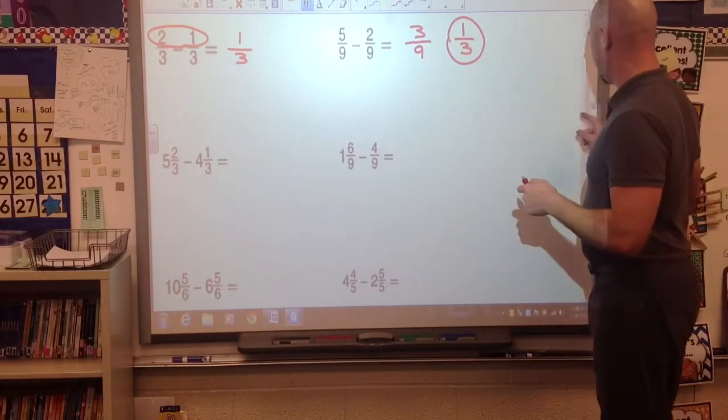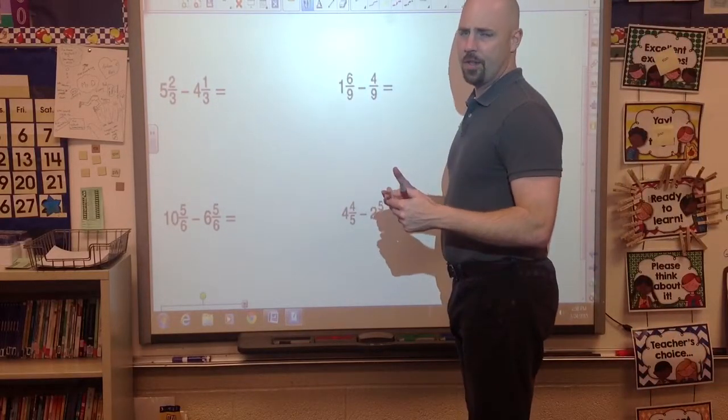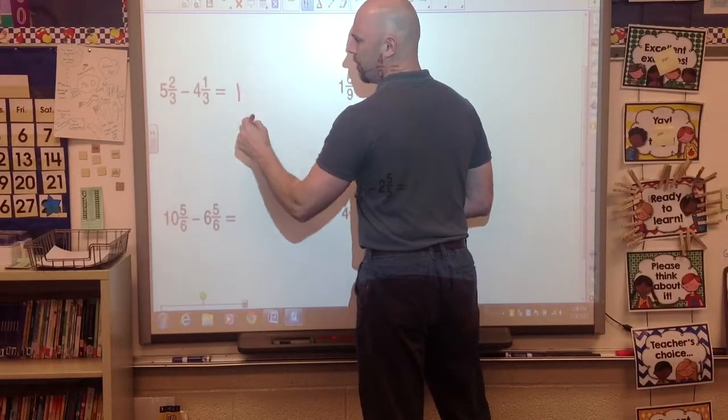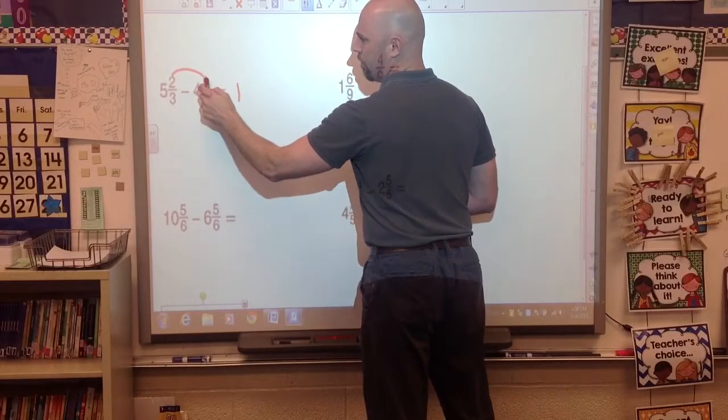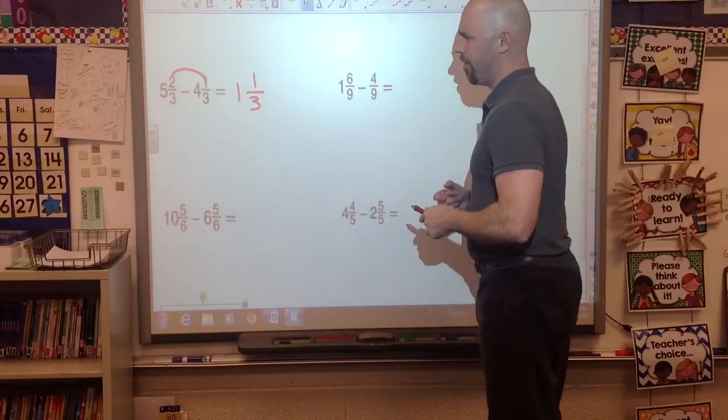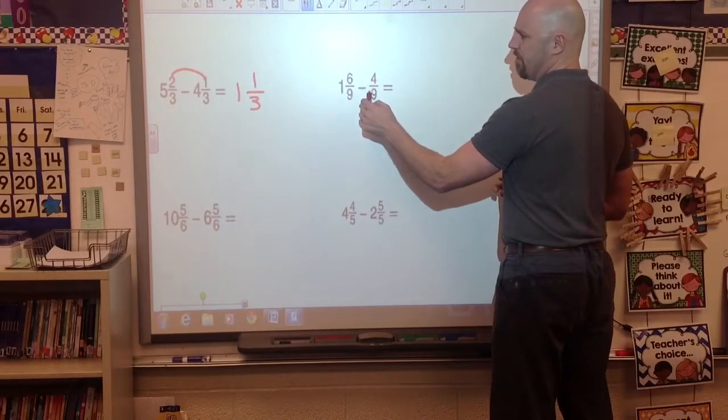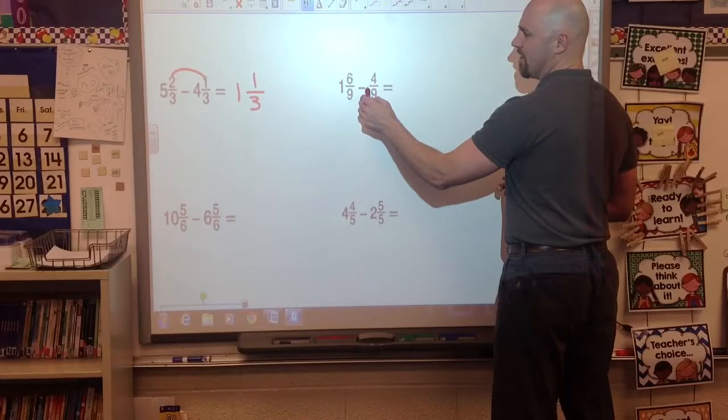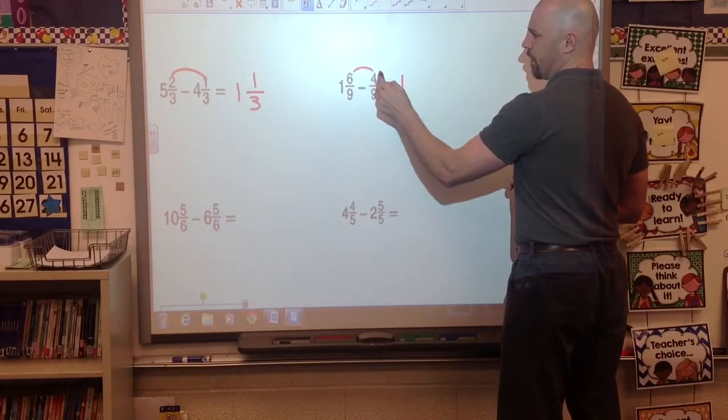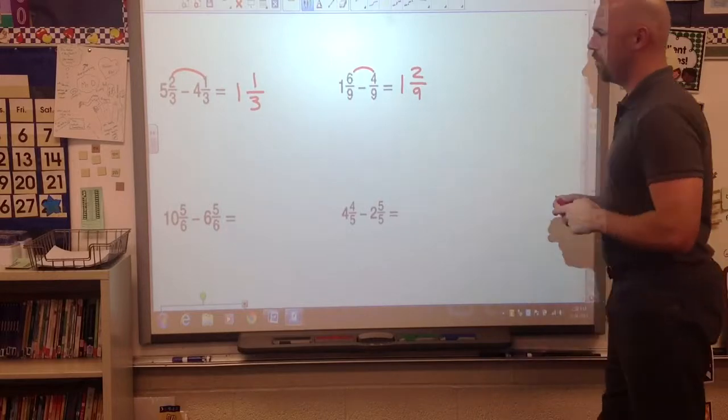Let's jump down to some of our mixed numbers here. Now we're going to do the same thing we did before. We're going to combine like terms, things that are the same. So I'm going to look at my whole numbers first. 5 minus 4 is 1. And now I'm going to look at my fractions. 2 minus 1 is 1. And my denominator stays the same. So that's 1 and 1/3. Now over here, I don't have a whole number, so I just pretend there's an invisible 0 in front here. 1 minus 0 is 1. And 6 minus 4, because we look at the top of that fraction, is 2. And our denominator stays the same. 1 and 2/9.